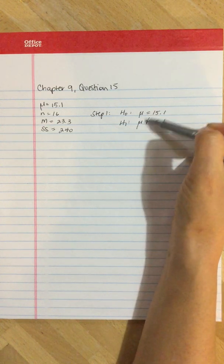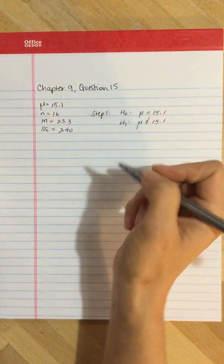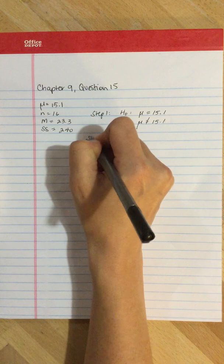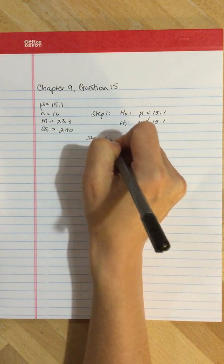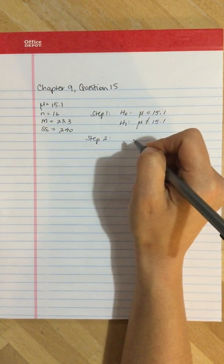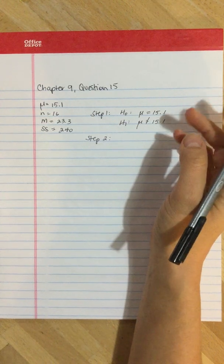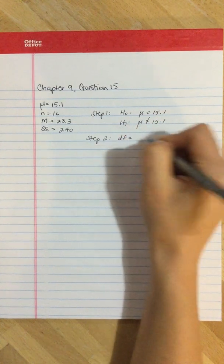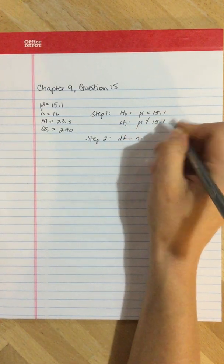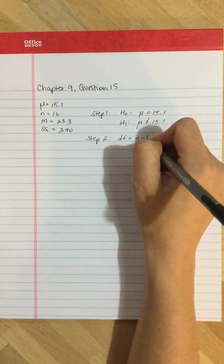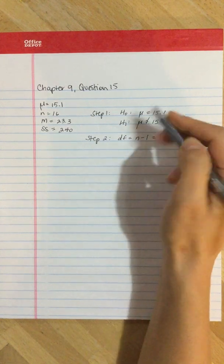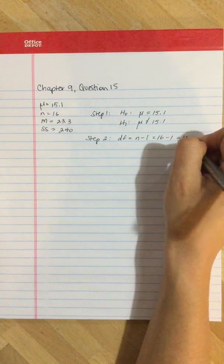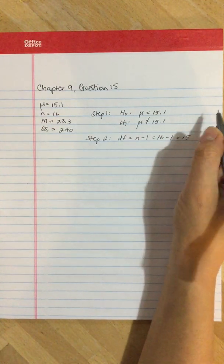Step two of the hypothesis testing procedure is we need to find our critical values. To do this, we first have to find our degrees of freedom. Degrees of freedom for a single sample t-test is n minus one, so we've got a sample of 16, n minus one is 15.